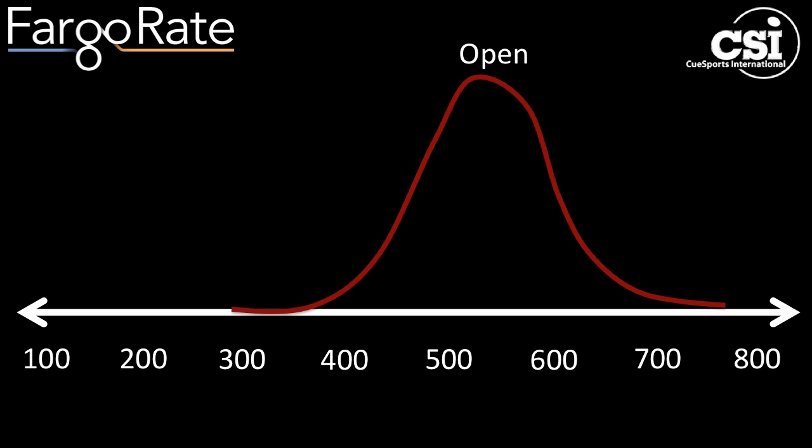Here's roughly the distribution of ratings for players in the old open division. There's a wide range — most of the players are in the 500s, many are in the 400s, many are in the 600s. Importantly, if you were to look at who finishes high in the tournament and who goes home with most of the money, it's players well into the 600s.